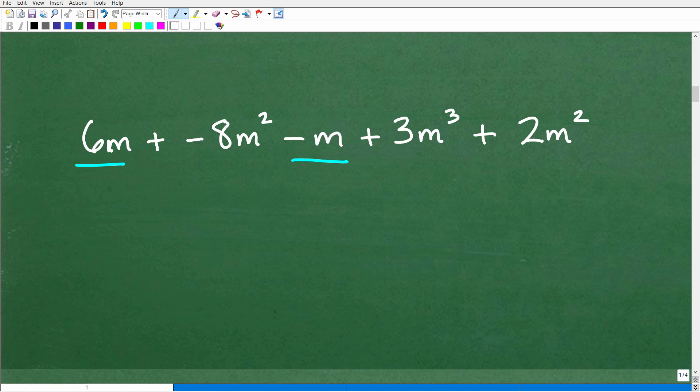So I have a 6M and a negative 1M. So now I can combine these like terms. So I'm going to be thinking, all right, 6 plus negative 1 is what? These are the coefficients 6 and negative 1. This negative M, there's really a negative 1 there. So that would be, of course, 5. So we would have 5M.